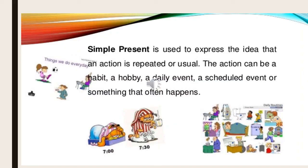Simple present tense is used to express the idea that an action is repeated or usual. The action can be a habit, a hobby, a daily event, or a scheduled event — like the bell rings at seven o'clock every day. It also covers things that often happen or things that rarely happen.